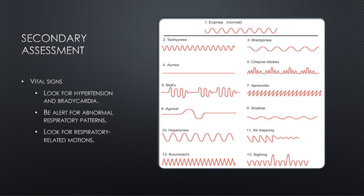When performing vital signs, look for a combination of hypertension and bradycardia, which may suggest increased intracranial pressure. Be alert for abnormal respiratory patterns such as Cheyne-Stokes breathing, which usually points to a non-neurologic source of coma. Kussmaul's respirations are classic for diabetic ketoacidosis. More worrisome patterns include central neurogenic ventilation, which may indicate a brain bleed. Huffing and puffing that doesn't move much air can indicate respiratory failure. Sneezing and yawning require an intact brainstem, whereas hiccuping and coughing may indicate brainstem damage.